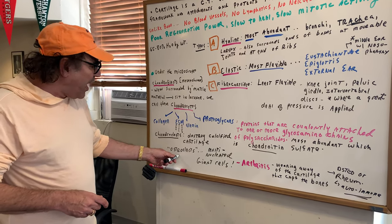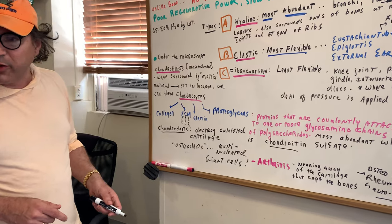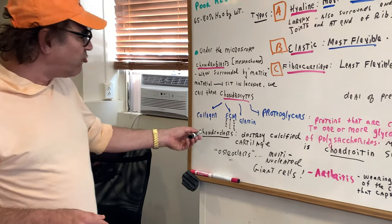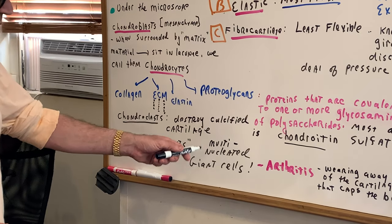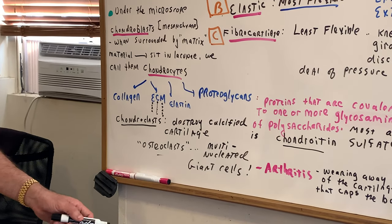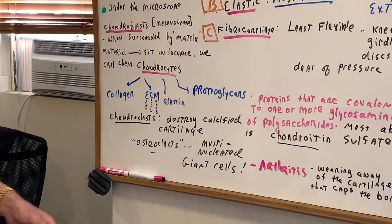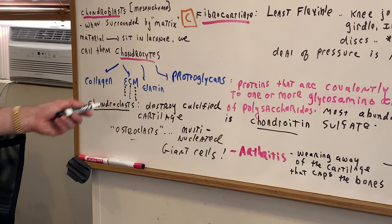When I was a student, all the pathology books used to just call them osteoclasts. But now, they changed it to a chondroclast. And that sounds fair, since it is in cartilage. But once again, these are the same type of cells that you see in bone. And they're multinucleated, and they're often giant cells. You can't miss them.